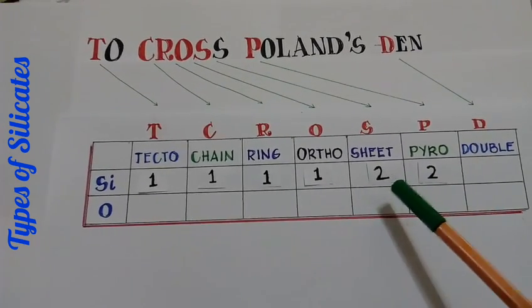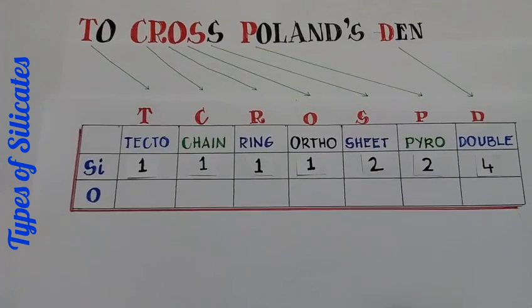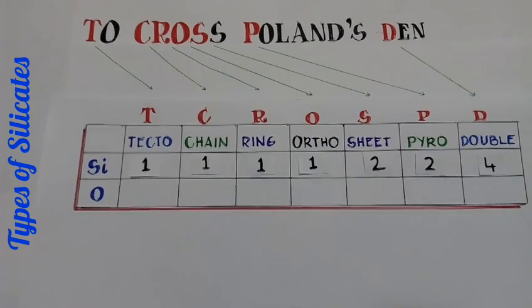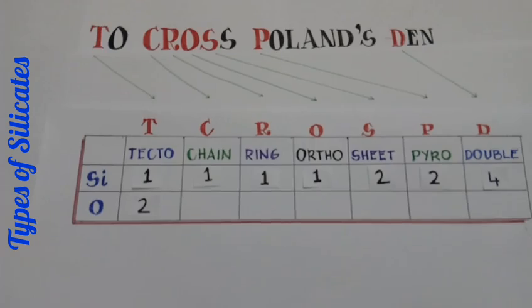Then place two in the next two columns like this. In the last column, place a four for the oxygen row.